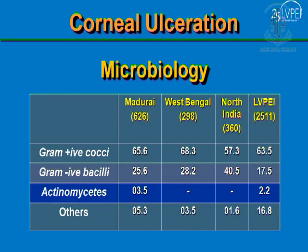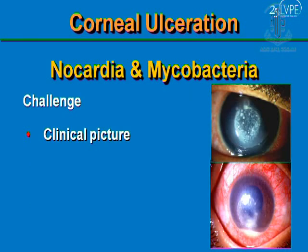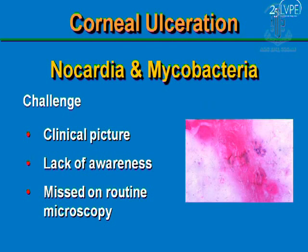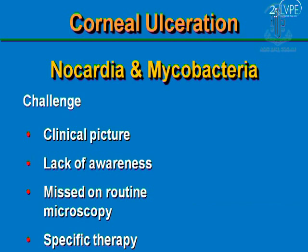Another important challenge is infections caused by the actinomycetal group — nocardia and atypical mycobacteria. Although both pathogens have a classical clinical picture, there is lack of awareness about these organisms causing corneal infection even among ophthalmologists. They are often missed on routine microscopic examination — gram stain or Giemsa stain — because they do not take up these stains properly. Unless you include acid-fast staining or recognize the paucity of staining on gram stain, you are likely to miss these organisms. Both also require specific therapy and are not likely to resolve on conventional management.